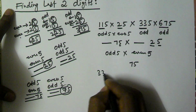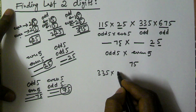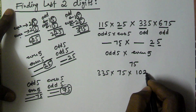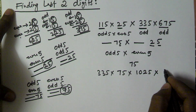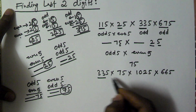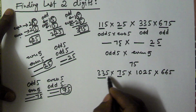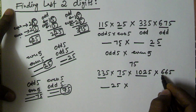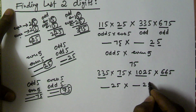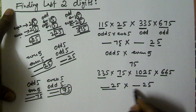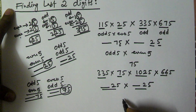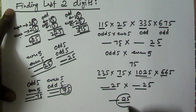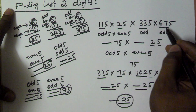Let's solve one other example: 25 into 1025 into 665. This one is odd 5 and this one is odd 5, so the last 2 digits are 25. Even 5 and even 5 — so the last 2 digits are going to be 25. The last 2 digits of this multiplication is 25, and the last 2 digits of the previous multiplication was 75.